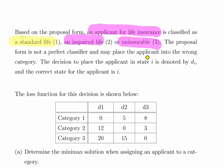These are actuarial terms, but essentially three categories. The proposal form is not a perfect classifier and may place the applicant into the wrong category. The decision to place the applicant in state i is denoted di, and the correct state for the applicant is i.